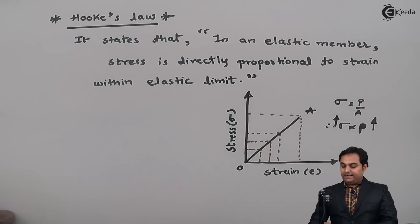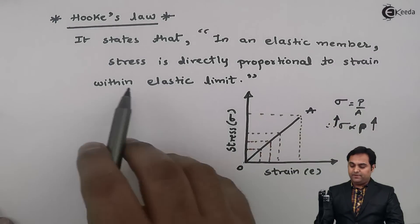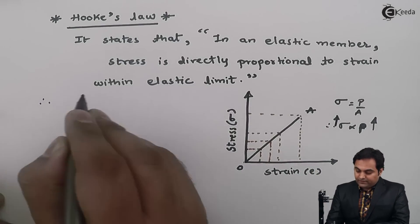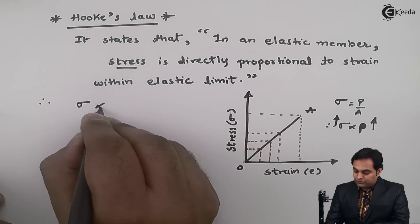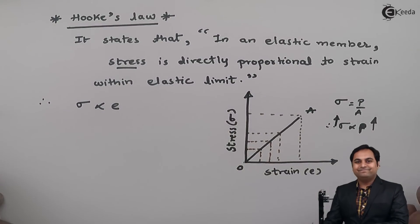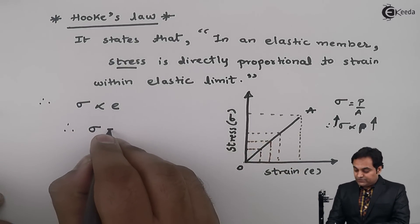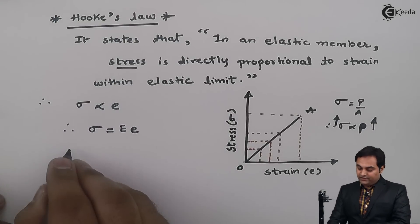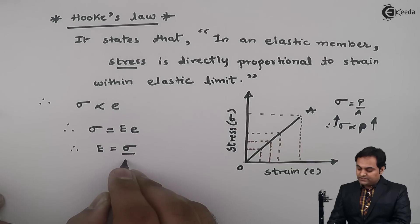When I increase stress, strain increases at the same time. This is Hooke's Law: in an elastic member, stress (sigma) is directly proportional to strain (epsilon). Removing the proportionality sign, stress equals a constant E — the modulus of elasticity — so E equals stress upon strain.